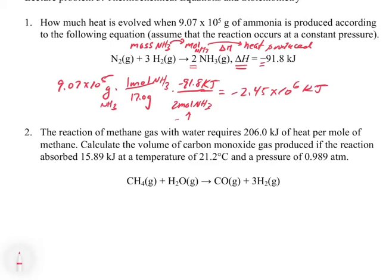Let's look at the second one. The second one says, the reaction of methane gas with water requires 206 kilojoules of heat per mole of methane. So this one is giving us information that we could potentially write a delta H, but it's not giving us a delta H outright. So for this problem, unlike the first problem, we don't get a delta H off the bat. We have to use our ability to write thermochemical equations to put a delta H in here.